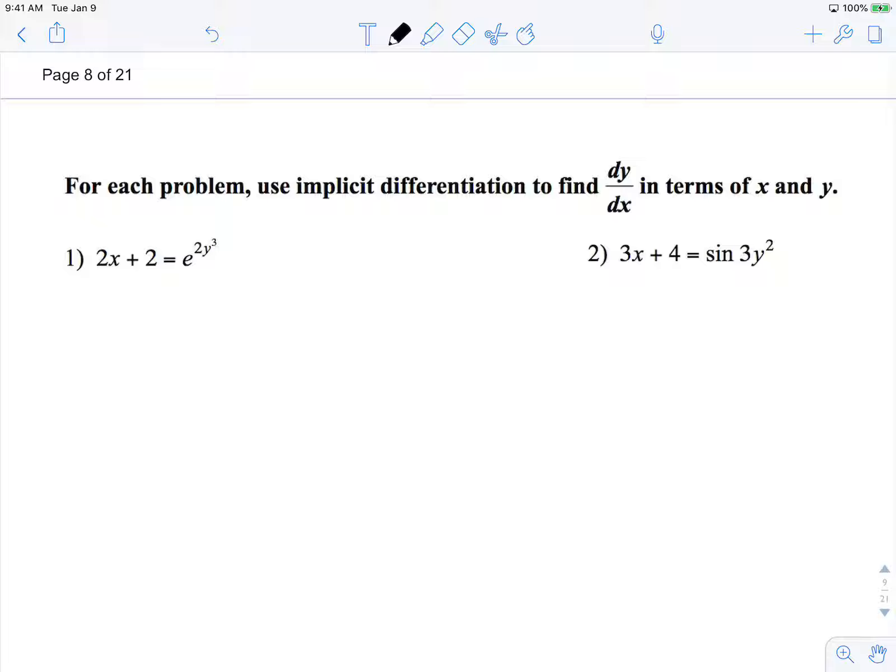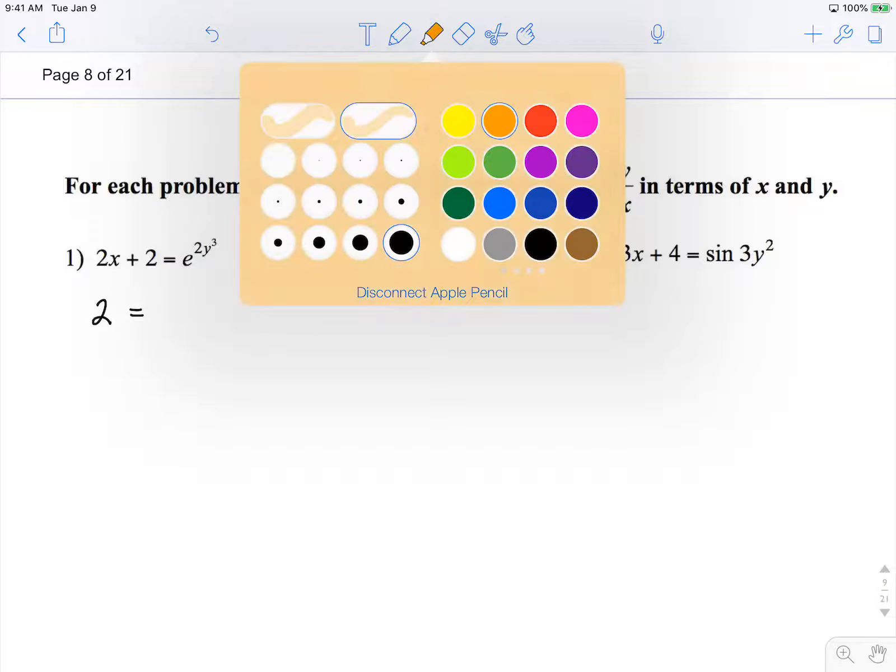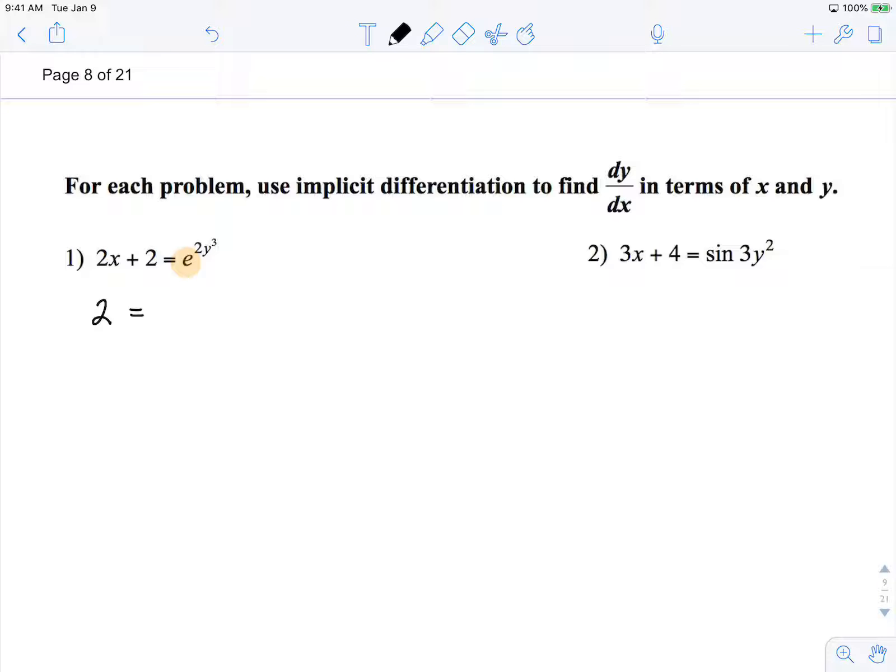Let's continue on with more examples of implicit differentiation. So working from left to right, the derivative of 2x is 2 and the derivative of 2 is 0 equals. Here I see a composition of functions, my outer function is